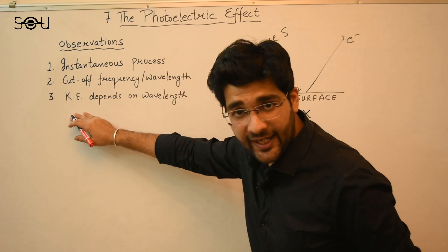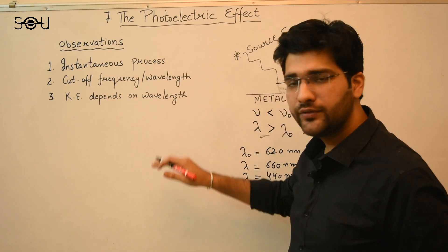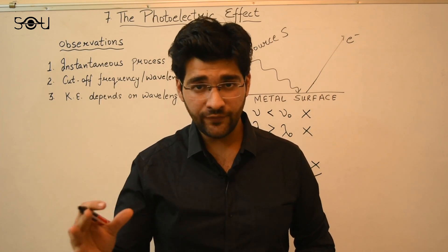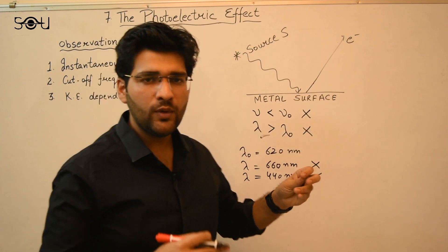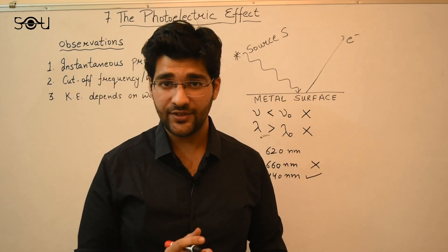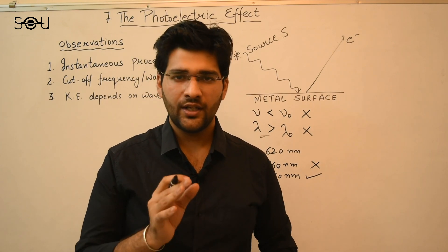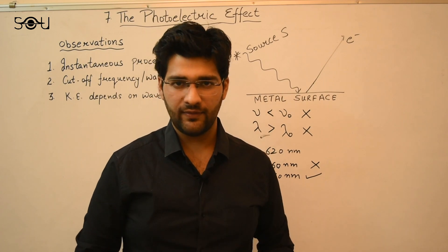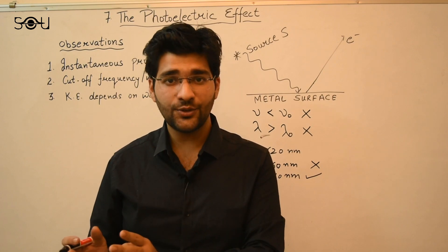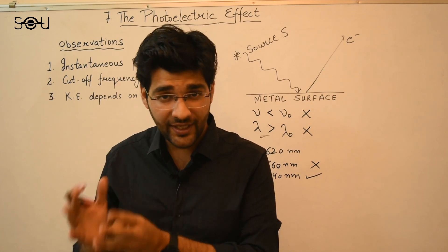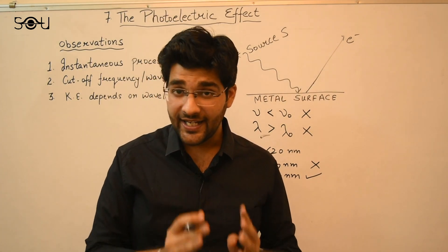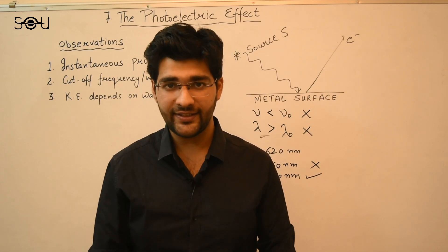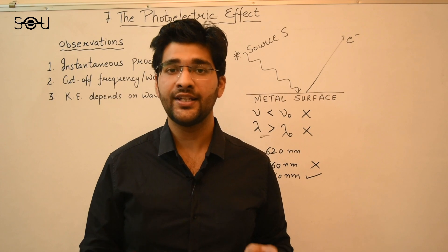The third observation is that the kinetic energy of the emitted electrons depends only on the wavelength of the light, not on its intensity. Intuition tells us that a brighter source should knock off electrons with greater kinetic energy, but that's not the case. Whether you use a very weak or a very bright source of the same wavelength, the kinetic energy of the ejected electrons will be identical — it only depends on the frequency or wavelength, not the brightness or intensity.